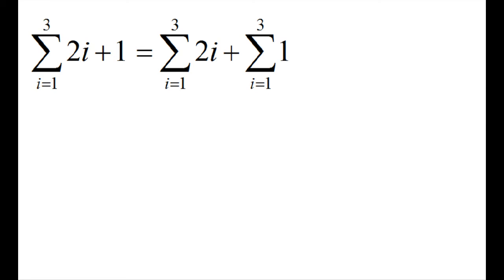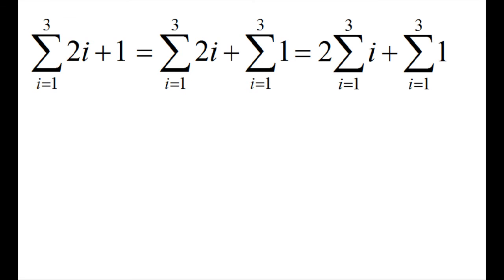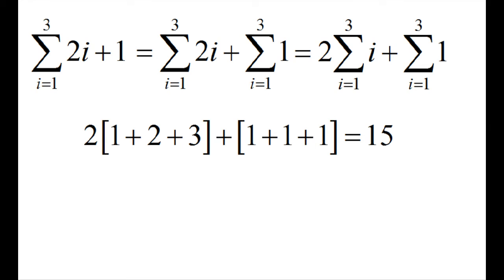First, using property number two, we know that we can break this up into two summations. Second, using property number one, we know that we can pull out the two out of the first summation because it's just a constant multiple. Now we can evaluate each sum and get the same answer as before.